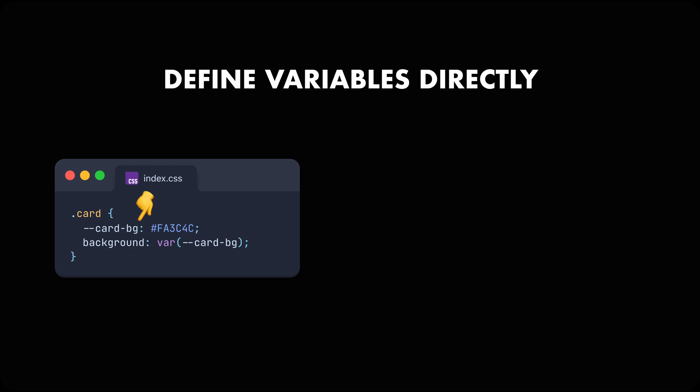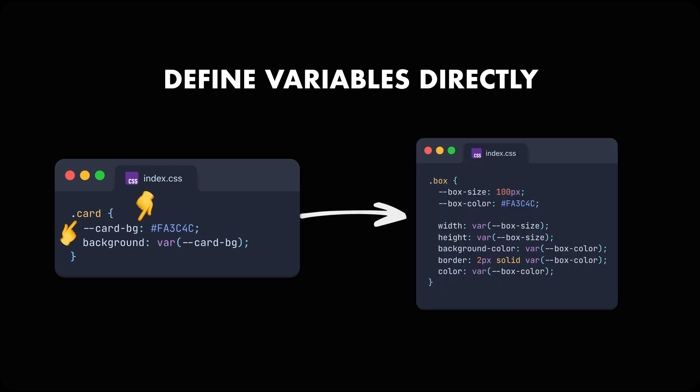What's even cooler is that you can define variables inside the CSS class. This is useful when you want to use one specific value across several properties, for example width or colors.